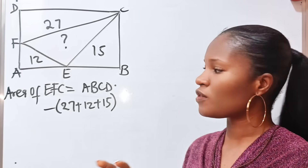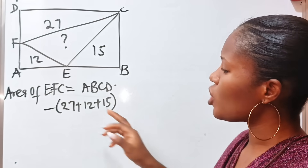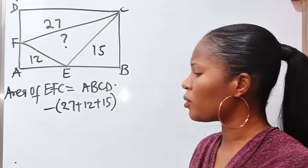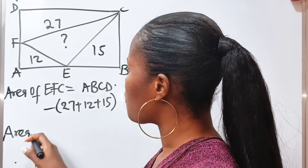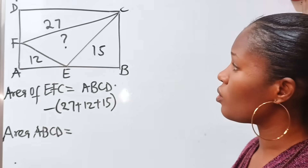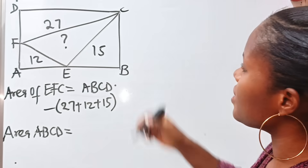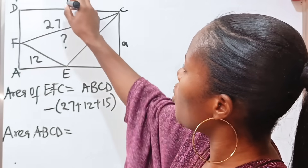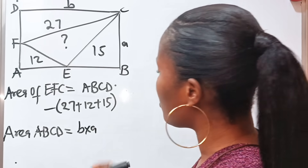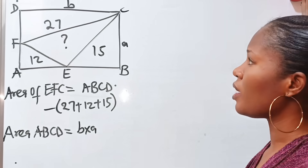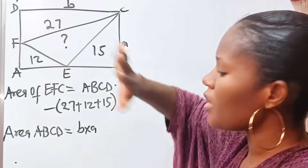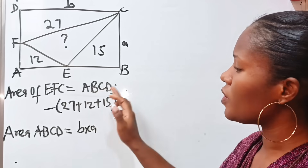What is preventing us from getting the area of this portion is just the area of rectangle ABCD. The area of a rectangle is length times breadth. Let us name the sides: call BC small a, and call DC small b. So the area of this rectangle is b times a. If we get the value of a and b, we just subtract the sum of the three triangles from whatever we got.